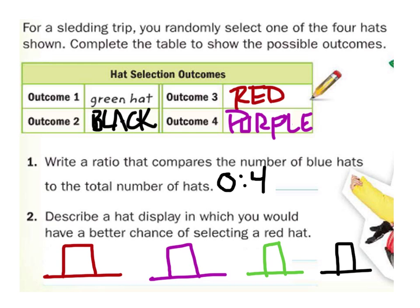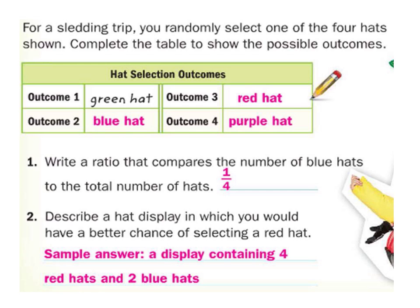To describe a hat display where you'd have a better chance of selecting a red hat, there are a couple of things we can do: we can either add a red hat, or take away one of the other hats, or do both. This improves our chances of getting a red hat. If we just took away the green one, that still increases our chances of picking the red hat. Since they had chosen the blue hat once, it was one out of four.